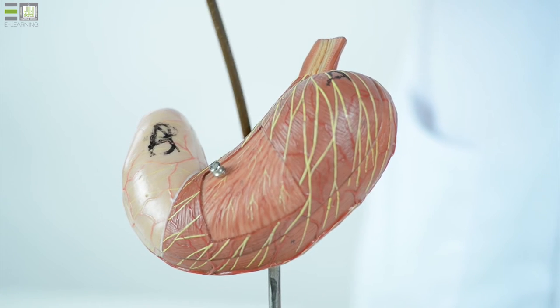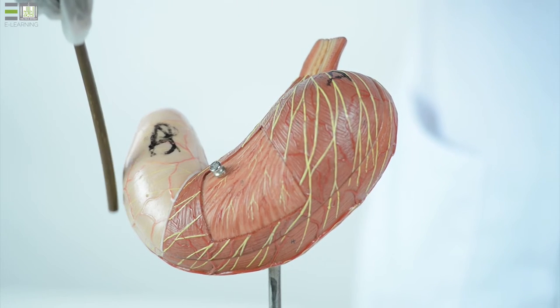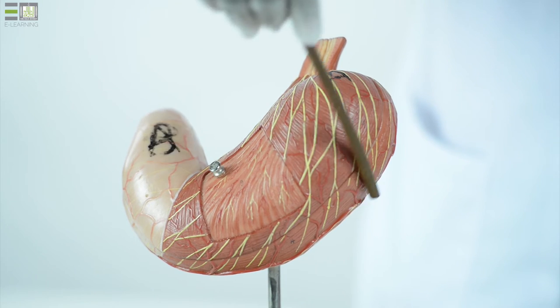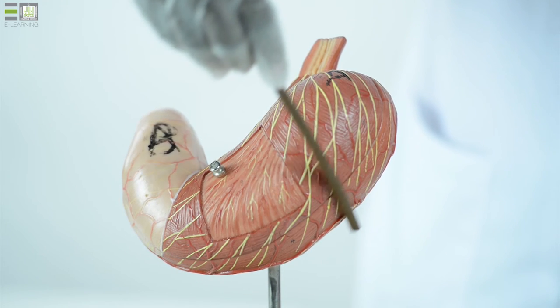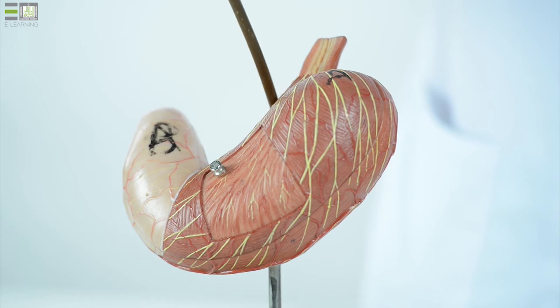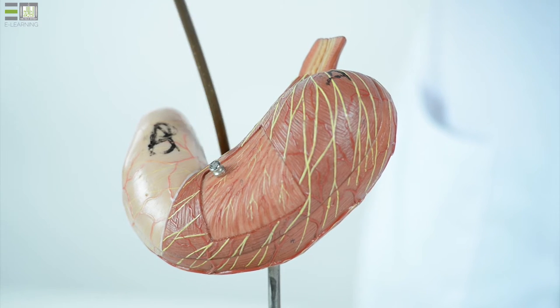The two borders are characterized by the presence of peritoneal ligaments. We call them greater omentum at the greater curvature and lesser omentum at the lesser curvature.